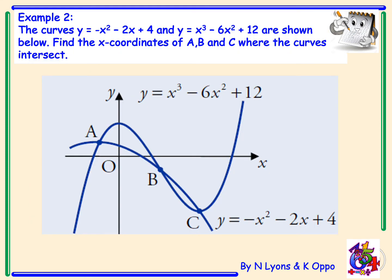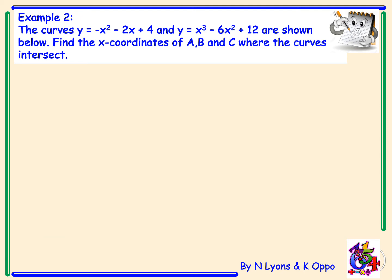Example 2. The curves y equals negative x-squared minus 2x plus 4 and y equals x-cubed minus 6x-squared plus 12 are shown below. Find the x-coordinates of a, b, and c where the curves intersect. We'll start by substituting our quadratic y equals negative x-squared minus 2x plus 4 into our cubic curve y equals x-cubed minus 6x-squared plus 12.